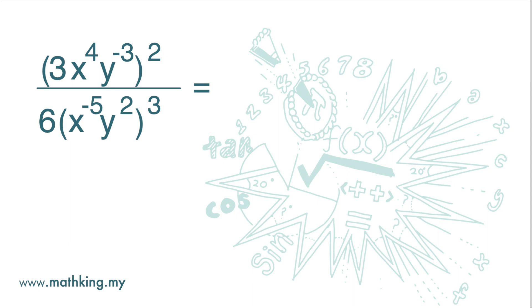This question looks complicated, but it's not hard. First, we are going to multiply the index 2 by the indices inside the bracket.